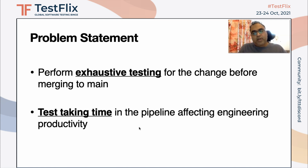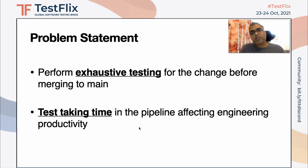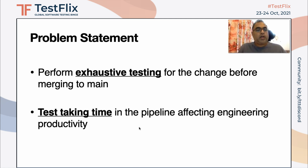There are two problem statements majorly that are being challenged and asked in day-to-day tester's life. One is exhaustive testing and second is that your tests are taking time. When I talk about exhaustive testing, many of us want to run their regression for any change that may happen in the code. But that is not always possible because of the lack of time, so what many of us do is only do targeted regression.